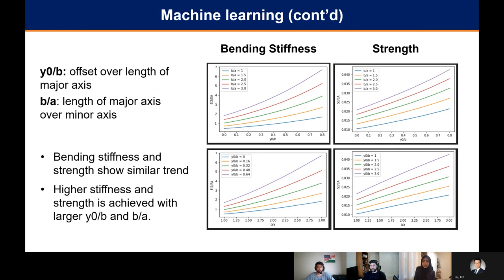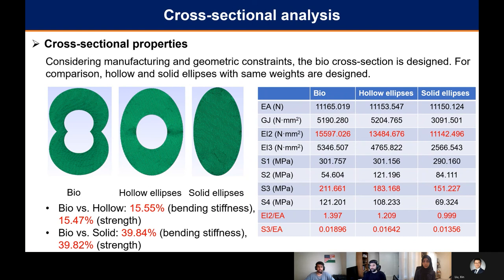The two parameters we were optimizing for — bending stiffness and strength — both showed a similar trend: they increased as the offset over the length of the major axis increased, and as the length of the major axis over the minor axis increased. For the cross-sectional analysis, comparing designs at the same weight for a fair comparison, we achieved a 15% improvement in bending stiffness and strength compared to the hollow ellipse design, and almost a 40% improvement compared to a solid ellipse design.